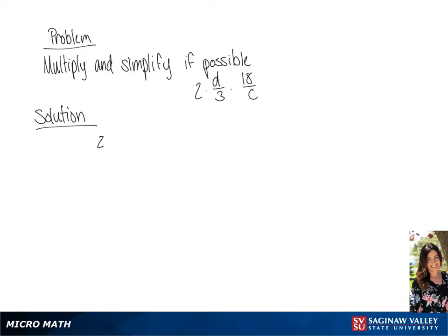We have 2 over 1 times d over 3 times 18 over c. We're going to simplify this problem before we solve.